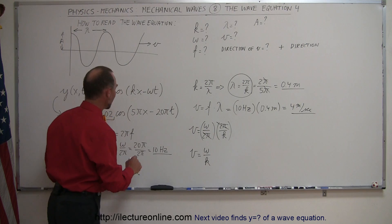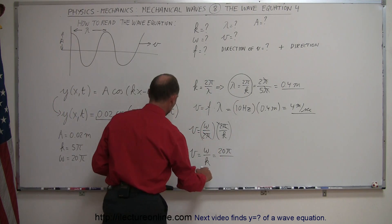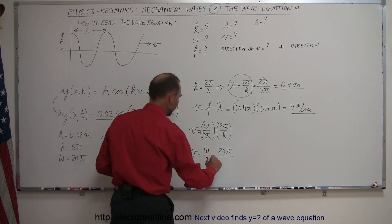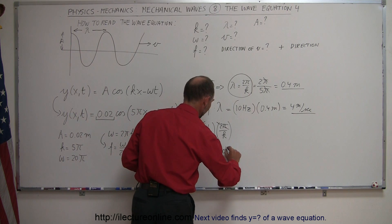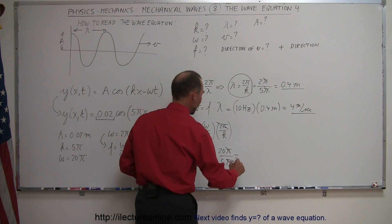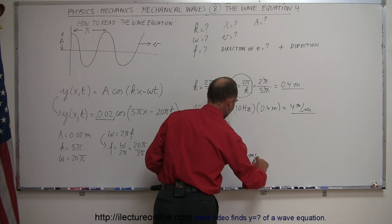Since I have my omega right here, which is 20 pi, and since my k right here is 5 pi, the pi's cancel out, 20 divided by 5 is 4, and that would be 4 meters per second.